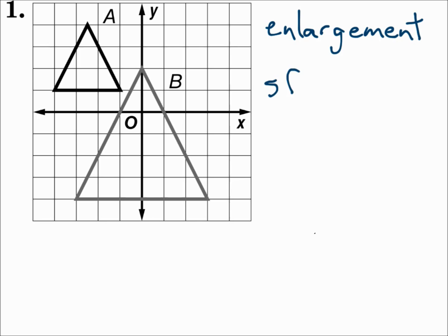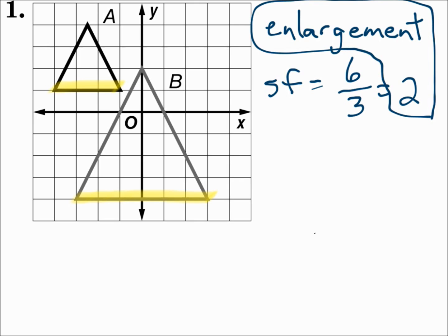To find the scale factor, do a new side length over an old side length. If you have a horizontal or vertical segment, use those since you can just count the length easily. On B, we have a horizontal side that's 6 units long. On A, the corresponding horizontal side is 3 units long. New over old is 6 over 3, which is 2. So the scale factor is 2. This fits the rule because if the scale factor is greater than 1, it's an enlargement, and our scale factor is 2, which is greater than 1.